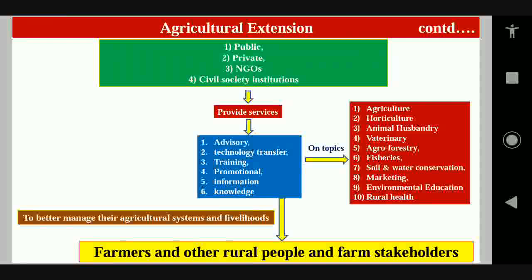What is agricultural extension? In agricultural extension, public, private, NGOs, and civil society institutions are the service providers. They provide services such as advisory service, technology transfer service, training service, promotional, information, and knowledge services.